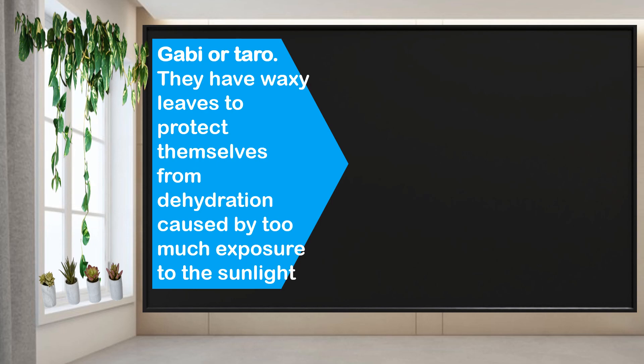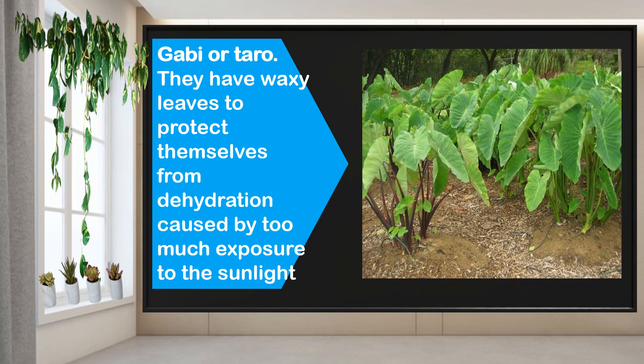Gabi or Taro has waxy leaves to protect themselves from dehydration caused by too much exposure to sunlight. The wax formation in their leaves helps them protect the water they have in their body.